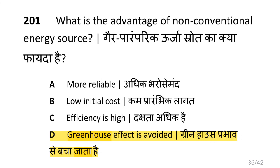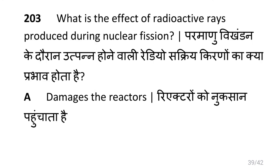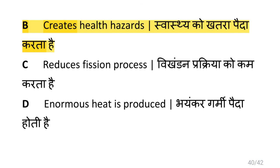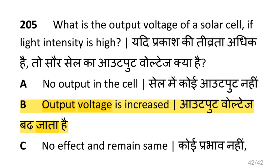What is the advantage of non-conventional energy source? Greenhouse effect is avoided. How is the potential energy from water converted as kinetic energy to generate power, i.e. by creating high head through penstocks? What is the effect of radioactive rays produced during nuclear fission, i.e. to create health hazards? What happens to solar cell output if the intensity of light is low, output decreases? What is the output voltage of a solar cell if light intensity is high, output voltage is increased?